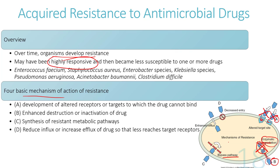Mechanism C involves alteration of the metabolic pathway that the drug uses to exert its bactericidal or bacteriostatic action. For example, if a drug normally works through steps A, B, and C, step B can be altered so the drug no longer works. This is called a bypass pathway — the bacteria bypasses the mechanism by which the drug normally operates.